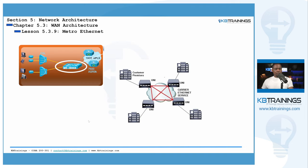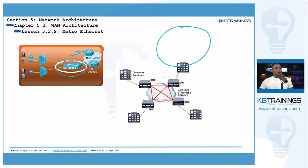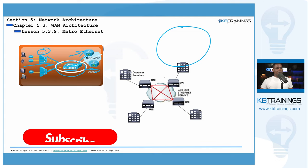Metro E designs typically feature a ring around the city. On one end there are lines going to the backbone or core of the service provider, and on the other end going to customers. Customers can be connected to the Metro ring via slums connected to it, or even directly connected through switches such as the ME3800X.